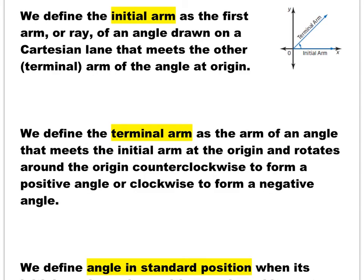We now define two new terms: the initial arm and the terminal arm. When you draw an angle, you have two sides. An angle is positive if, going from the initial arm to the terminal arm, you travel in a counterclockwise direction. If you travel in a clockwise direction, the angle is negative.